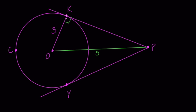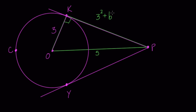So now we can see that we have a right triangle. This right here is our right triangle. We're given the base and hypotenuse of the right triangle, so we can use the Pythagorean theorem. 3 here is a leg, so 3 squared plus B squared — we don't know KP — equals the hypotenuse squared, 5 squared.